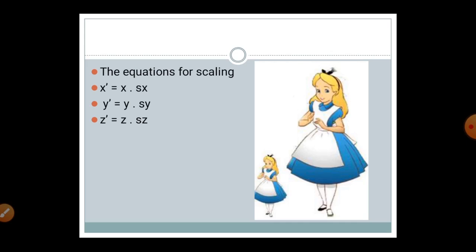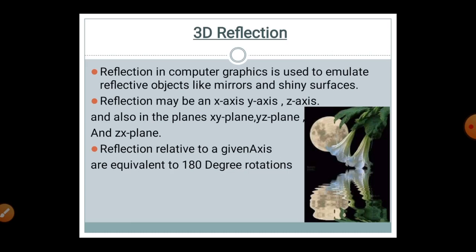Similarly, Y' equals Y multiplied by SY, and Z' equals Z multiplied by SZ. Here you can see a doll: initially on the left side it is quite small in size. After doing the 3D scaling operation, the doll gets bigger in shape and size. This is called 3D scaling.